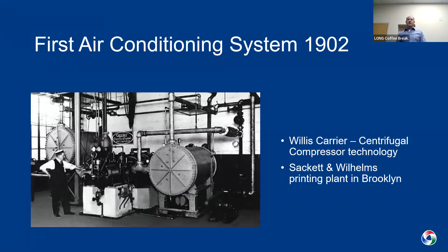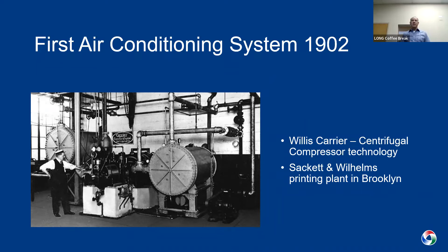You can't get started with refrigeration and compressor technology without recognizing the first air conditioning system. It was designed by a gentleman by the name of Willis Carrier — as you're probably familiar with the last name. In 1902, this was the first centrifugal system, utilized at a printing plant in Brooklyn. The main reason it was used was for dehumidification, since printing introduces a lot of latent moisture into the conditioned space, and they were trying to remove that to move paper around more efficiently.